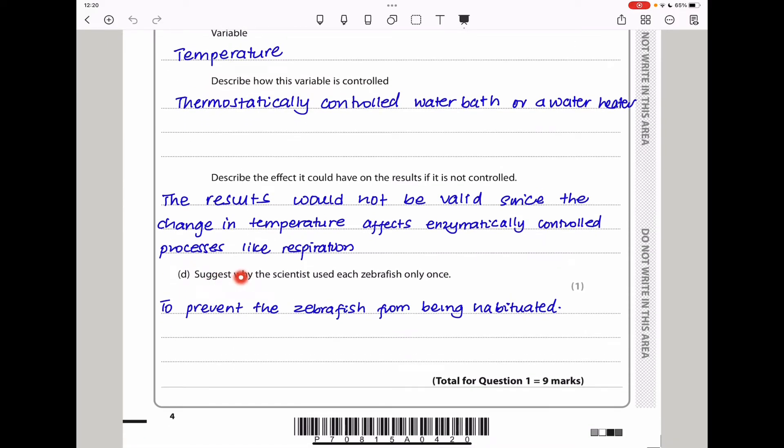Suggest why the scientists use each zebrafish only once. To prevent the zebrafish from being habituated. Habituated is when they become accustomed to the situation and then they will not have significant change. The results will be misleading. The response from them will not be as it would be if it was the first time. Habituation would cause problems with the results. This brings us to the end of question one.